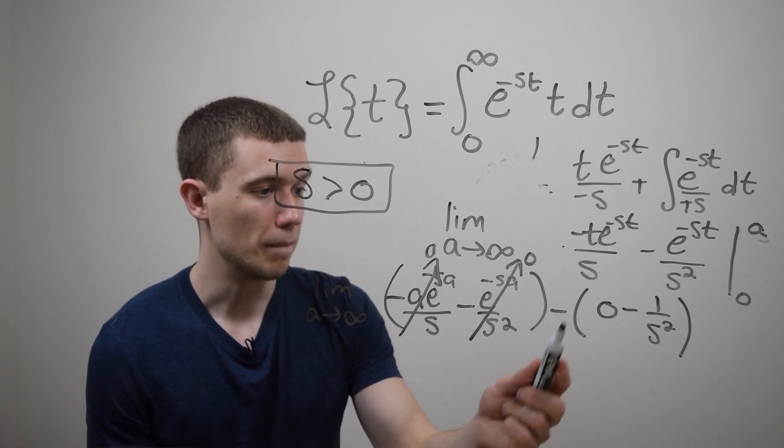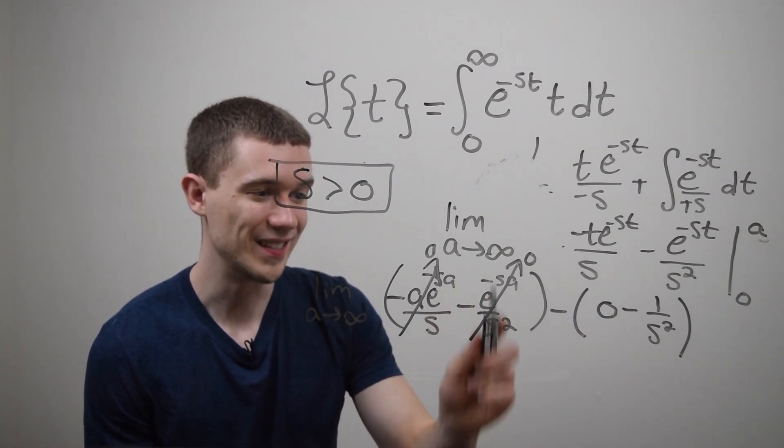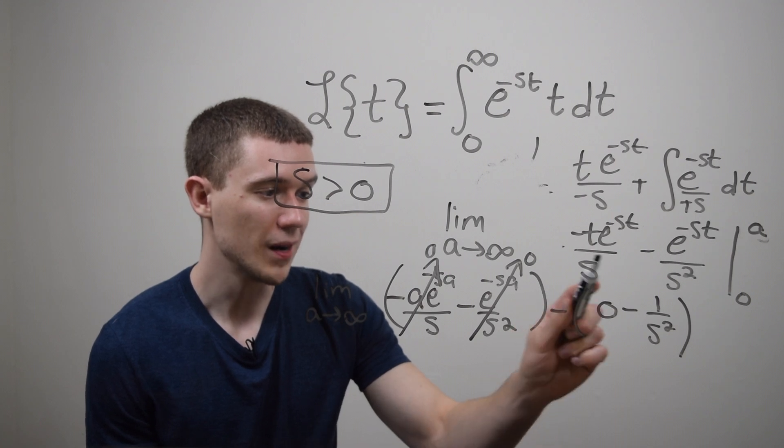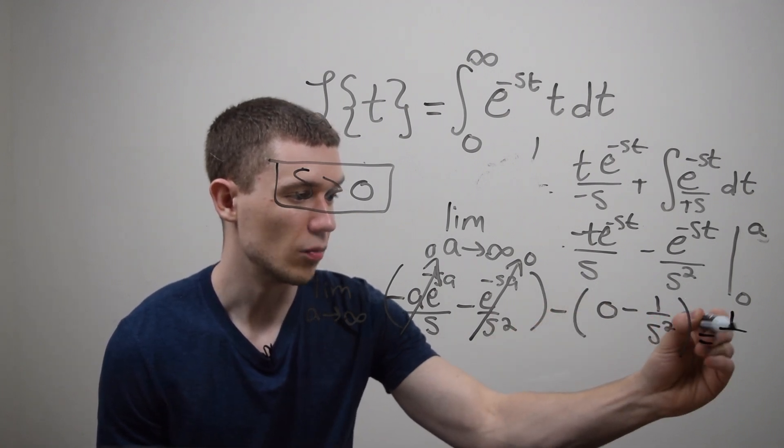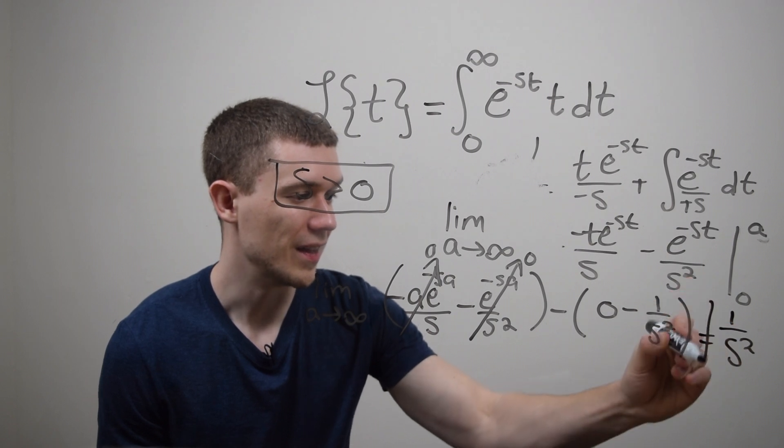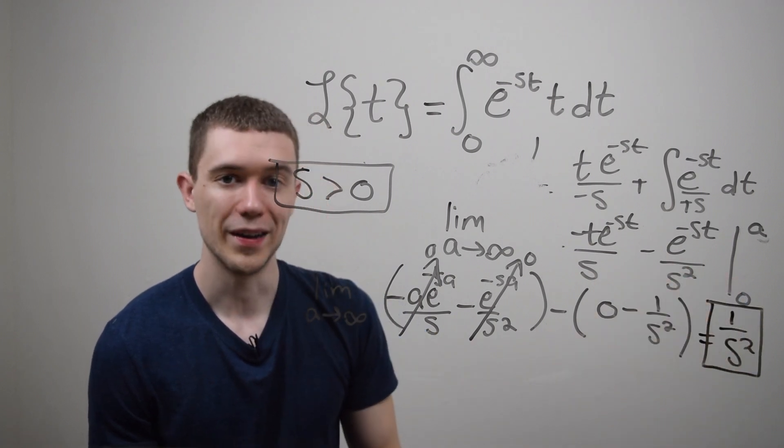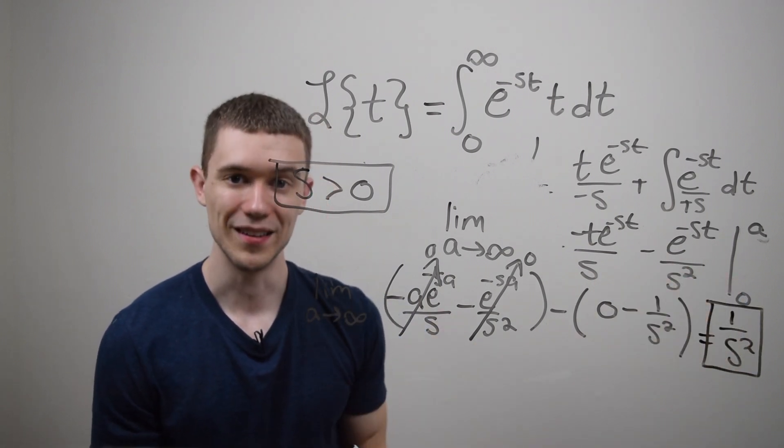So look what happens we get zero minus zero and then minus minus one over s squared that's plus one over s squared. And that is in fact what the Laplace transform of t is using the definition.